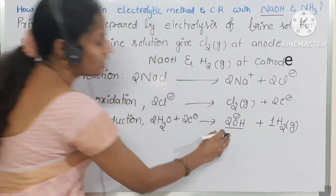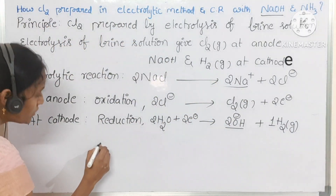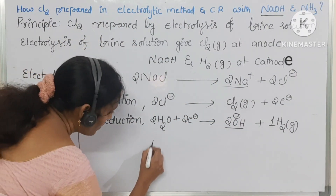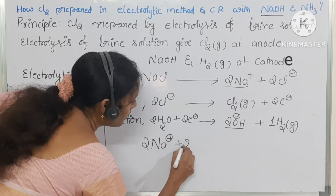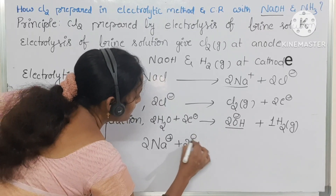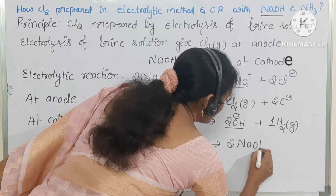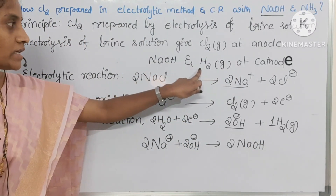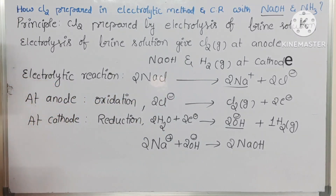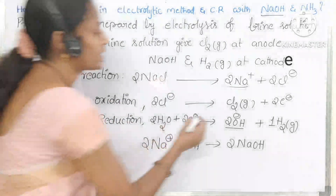The formed hydroxide ions and Na⁺ ions react with each other to form sodium hydroxide. So at the cathode, NaOH and H₂ gas are formed. This is the principle and electrolytic method for the preparation of chlorine gas.